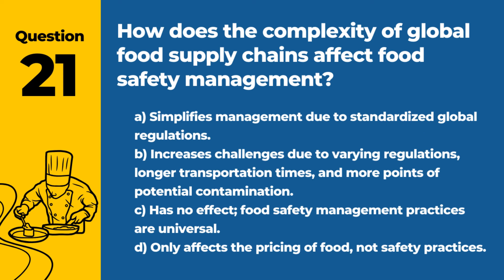Question 21. How does the complexity of global food supply chains affect food safety management? a. Simplifies management due to standardized global regulations. b. Increases challenges due to varying regulations, longer transportation times, and more points of potential contamination. c. Has no effect; food safety management practices are universal. d. Only affects the pricing of food, not safety practices. Answer: b. Increases challenges due to varying regulations, longer transportation times, and more points of potential contamination. Managing food safety in complex global supply chains requires careful coordination and adherence to diverse standards.